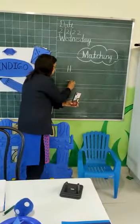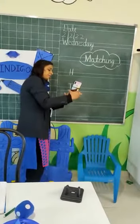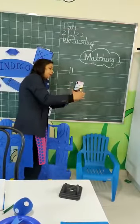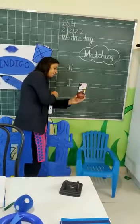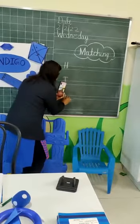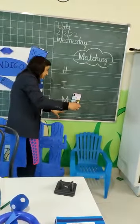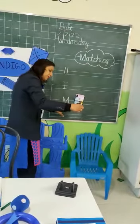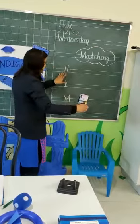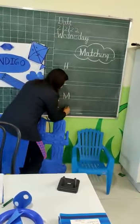Now, which letter is this? Tell me. Which letter is this? Arna, you speak — which letter is this? I. And which letter is this? I. Which letter is this? Tell me which letter is this. M. H. I. M. And C.